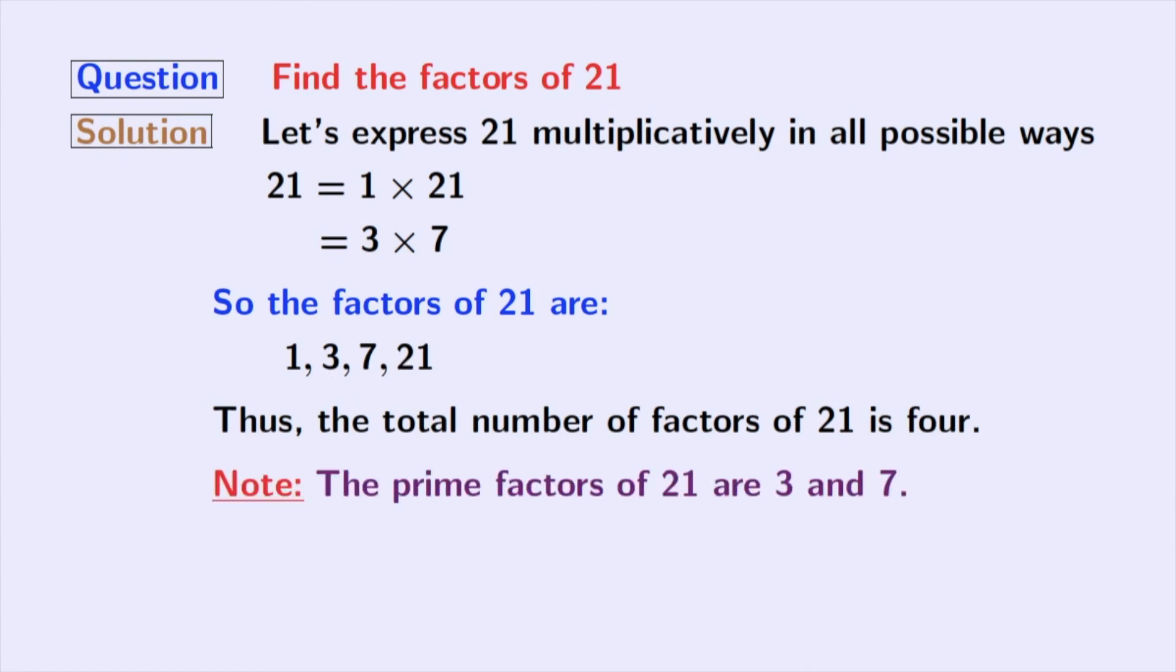So, we can say that the prime factors of 21 are 3 and 7.